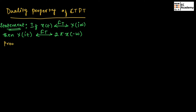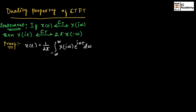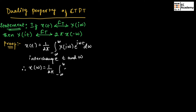Now let us prove this. We can write the inverse Fourier transform as X(t) equal to 1 by 2π integration from minus infinity to infinity of X(jω) into exponential to the power of jωt dω. Now let us interchange t and ω. Therefore, we can write: X(ω) equal to 1 by 2π integration from minus infinity to infinity of X(jt) exponential to the power of jωt dt.